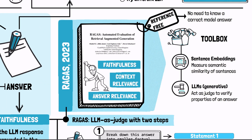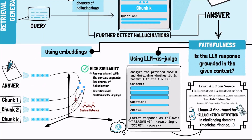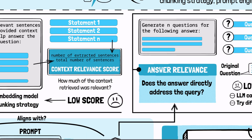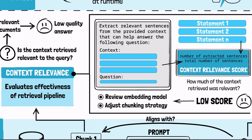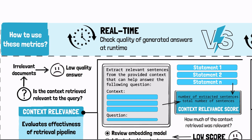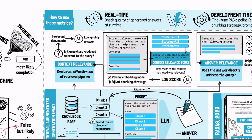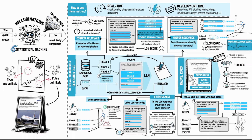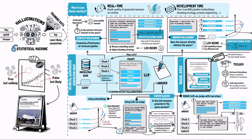These metrics can be used to evaluate different aspects of a RAG pipeline, such as faithfulness, answer, and context relevance. We'll see how to use some of these metrics as effective real-time hallucination checks that you can deploy in production right now.